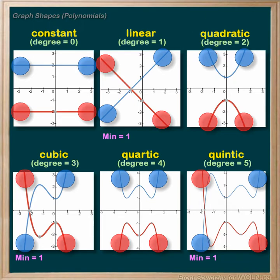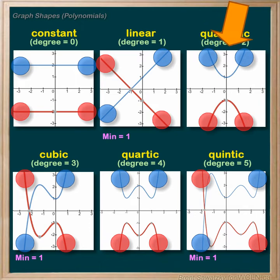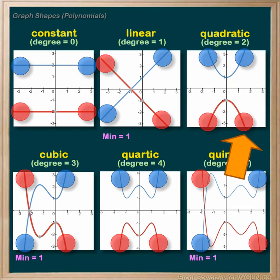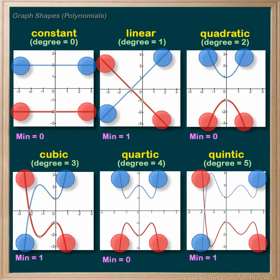Switching to even degree relationships, a positive even degree polynomial can stay totally in the top half of the graph — starting in the top left and ending in the top right. So even degree relationships can definitely avoid crossing the x-axis altogether. Similarly, negative even degree relationships could stay in the bottom half of the graph and never cross the x-axis. So the minimum number of x-intercepts for an even degree polynomial, whether positive or negative, is zero — they can avoid crossing the x-axis altogether.